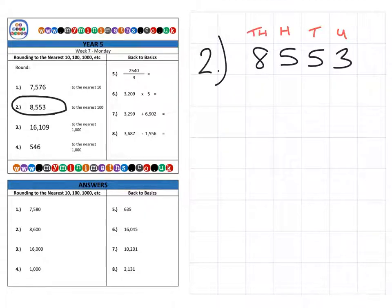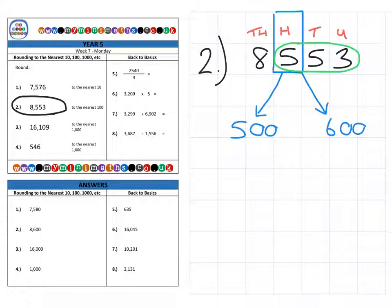And we're going to be rounding it to the nearest 100, which is this column here. So, this can either be rounded to the nearest 500 or 600, as 553 here comes between these two whole hundreds. And we need to decide which one it is closest to.